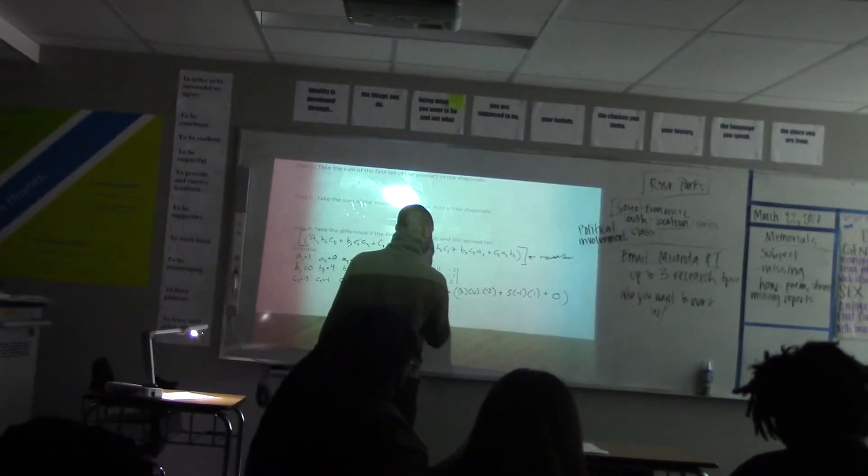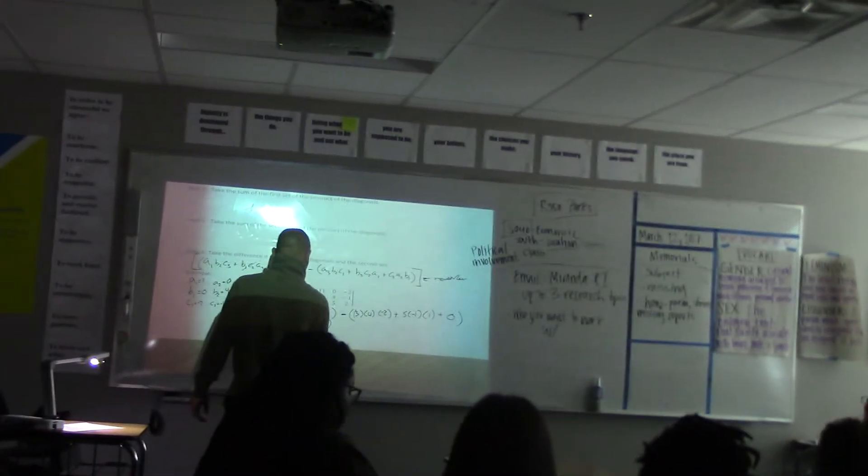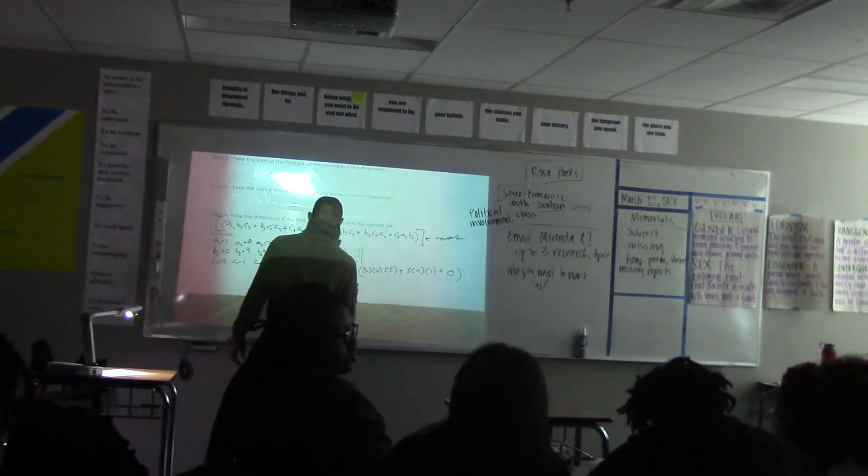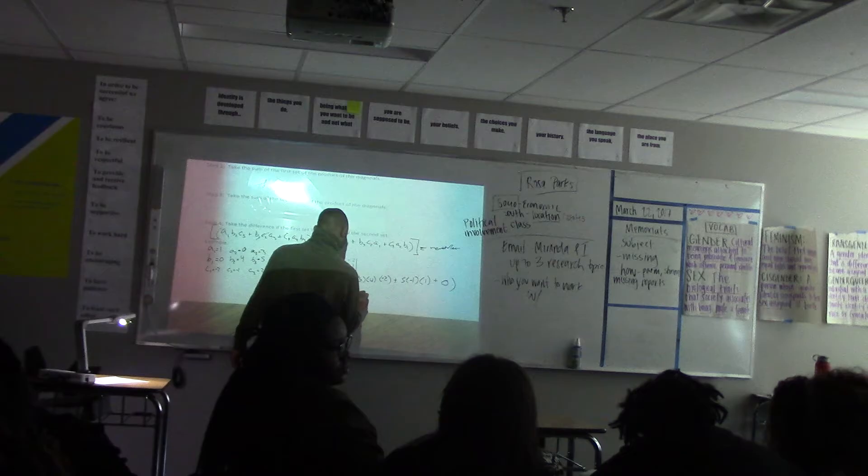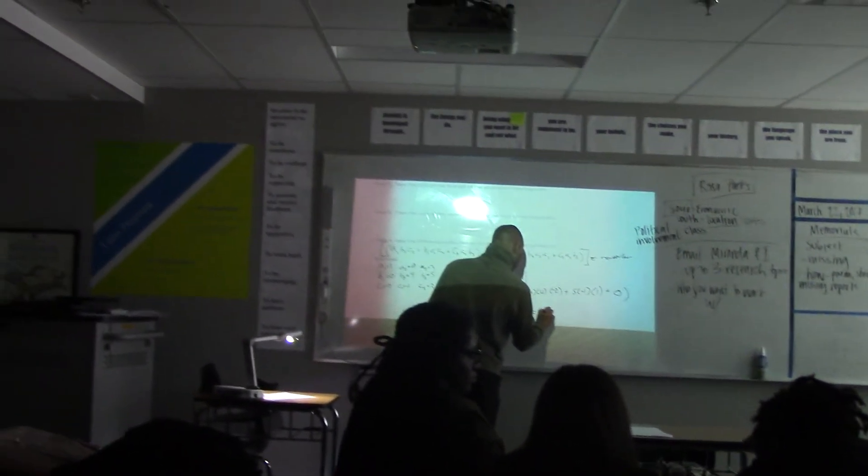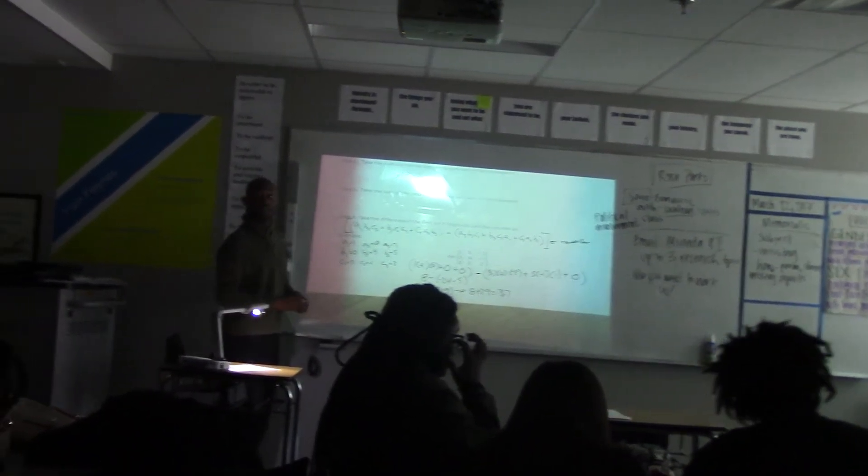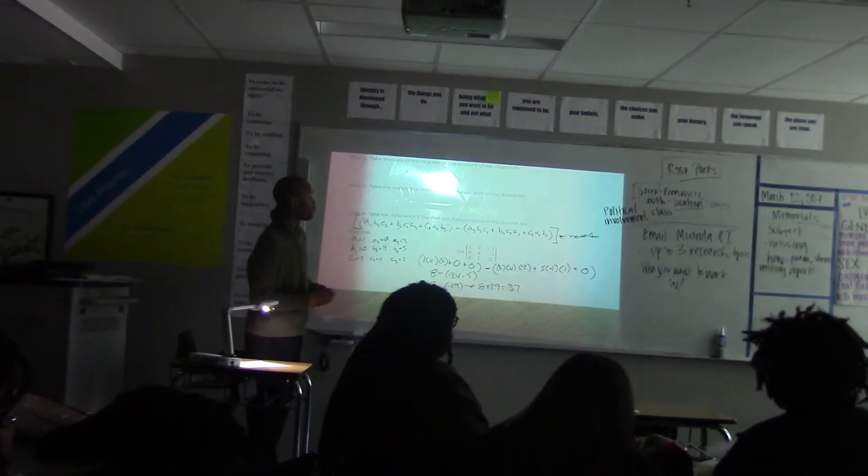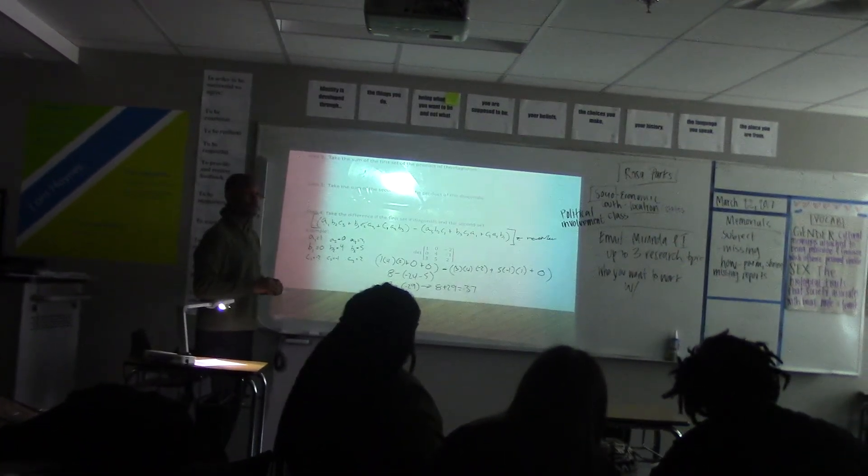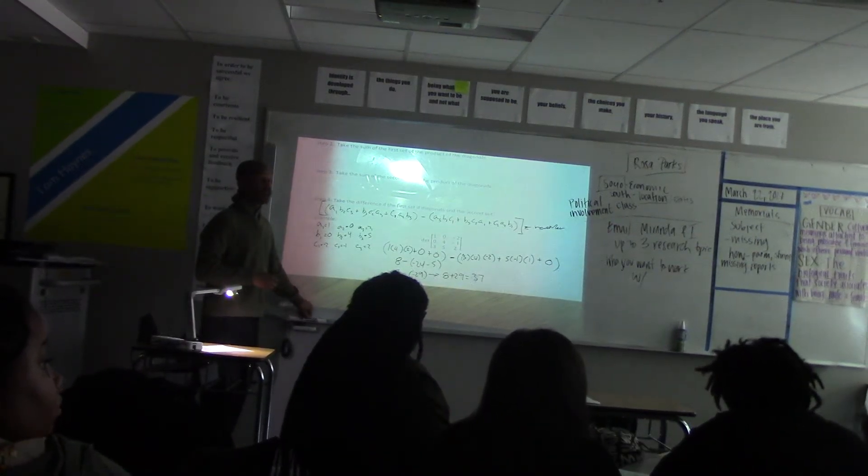And from here you just, from here it's just the math. 8 minus 12, 824, minus 5, 8 minus negative 29. It determines 8 plus 29, which is 37. So the determinant should be 37.